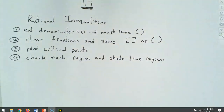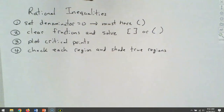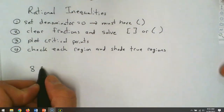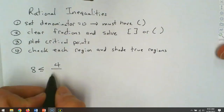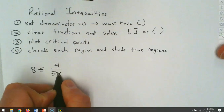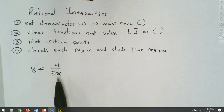So that's what we're going to be doing — check each region and shade the true region. We're going to start with a really easy one. This is a rational inequality, and it's rational because the x is in the denominator. Anytime you have an x in the denominator, that makes it a rational inequality.